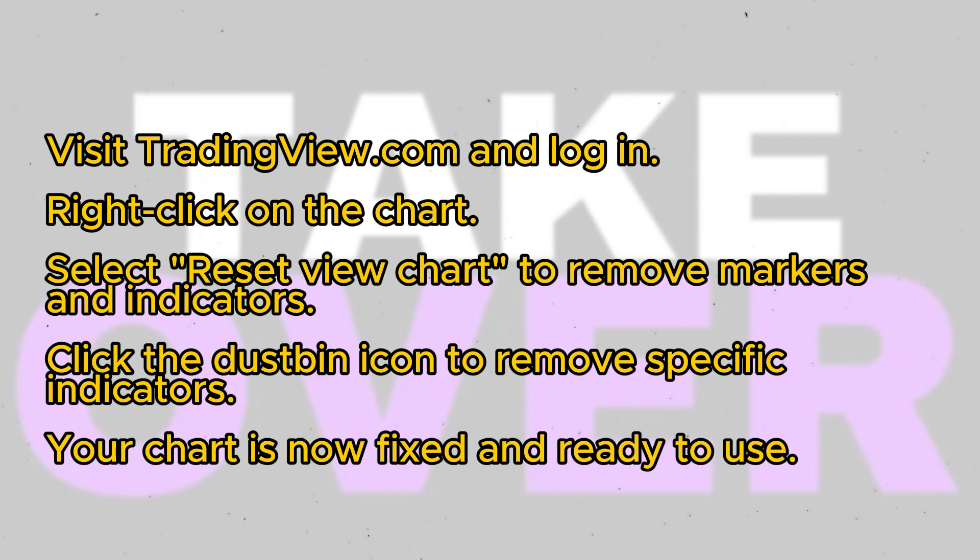If you wish to remove any markers or indicators from your chart and reset it, follow these straightforward steps. Right-click on the chart and select Reset View Chart. Additionally, you can remove specific indicators by clicking on the dustbin icon and selecting Remove Indicator.